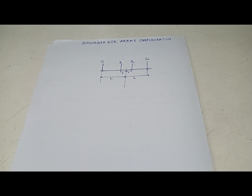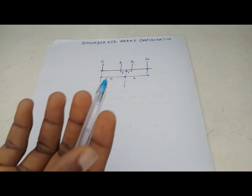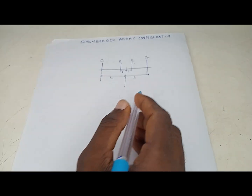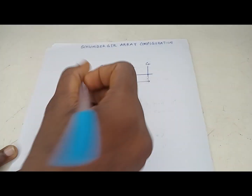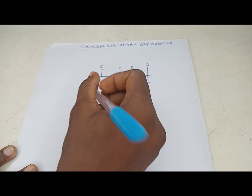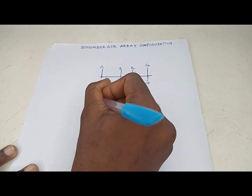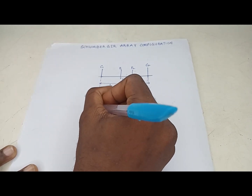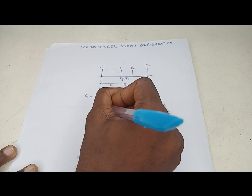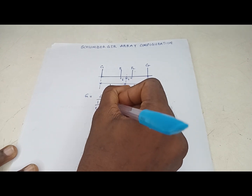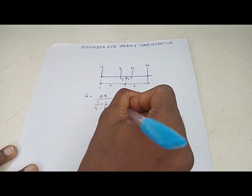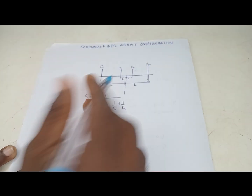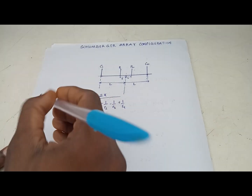The formula for the geometric factor is: G equals 2π over the quantity (1/r1 minus 1/r2 minus 1/r3 plus 1/r4).